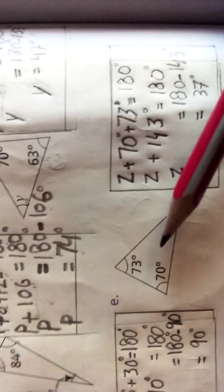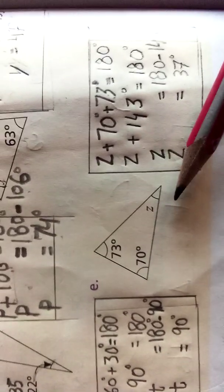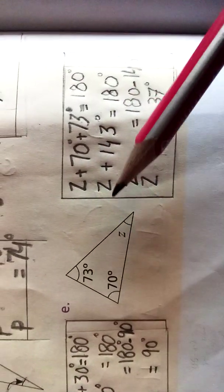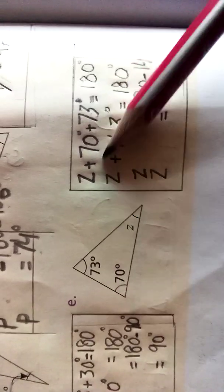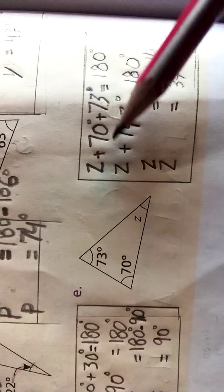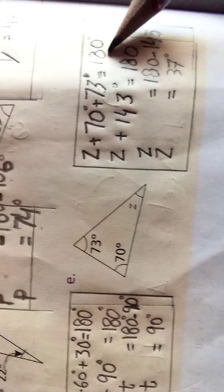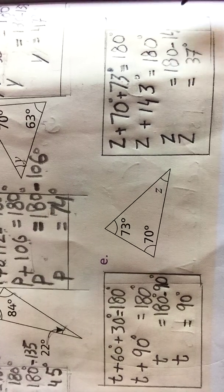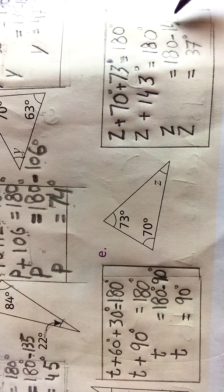Now the E part: a triangle has three angles — 73°, 70°, and Z. Angle Z is marked with a letter and we have to find its value. The rule is that the sum of three angles of a triangle is always equal to 180 degrees: Z + 73° + 70° = 180°. Adding 70 and 73 gives 143. Jump positive 143 to the other side — it becomes negative 143. Subtract 143 from 180, giving us 37 degrees.